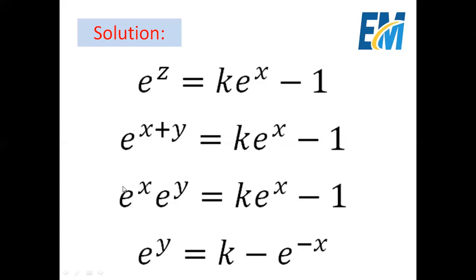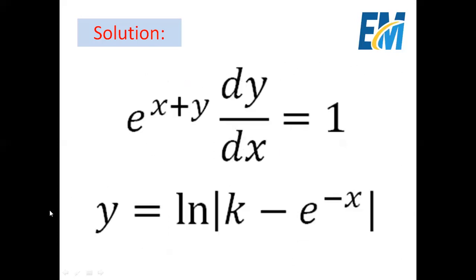Also, e to the power x plus y can be written as e to the power x multiplied by e to the power y, and this equals k e to the power x minus 1. We can divide the whole equation by e to the power x to get e to the power y equals k minus e to the power minus x. Then we can apply the natural logarithm to both sides. So, y equals ln of k minus e to the power minus x. Since k minus e to the power minus x equals e to the power minus y, it is a positive quantity, so we can remove the absolute value. Therefore, the solution of this differential equation is y equals ln of k minus e to the power minus x.